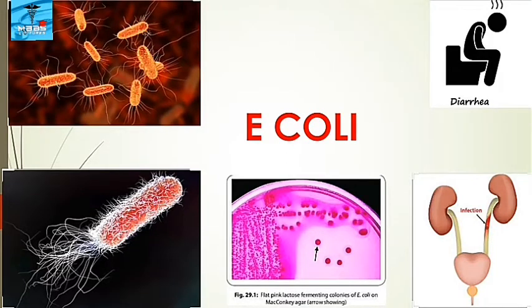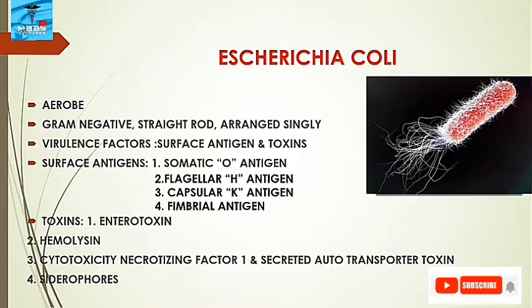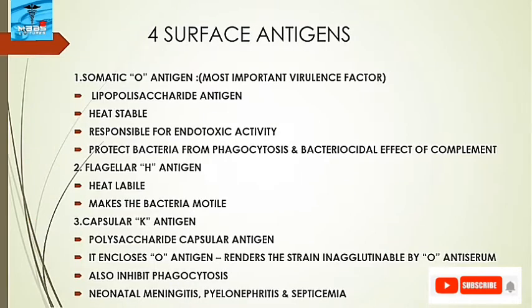E. coli is the most important aerobe inhabiting the gut of humans and animals. It is gram-negative, straight rod arranged singly. The important virulence factors include surface antigens and toxins. Surface antigens include somatic O antigen, flagellar H antigen, capsular K antigen, and fimbrial antigen. Toxins include enterotoxin, hemolysin, cytotoxic necrotizing factor 1, and secreted autotransporter toxin.